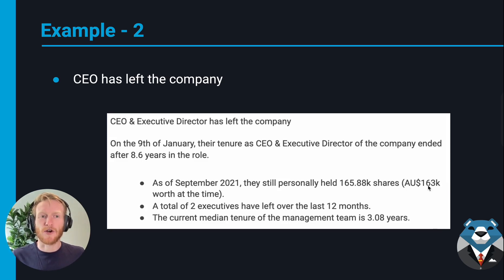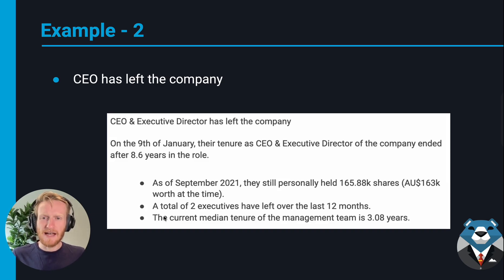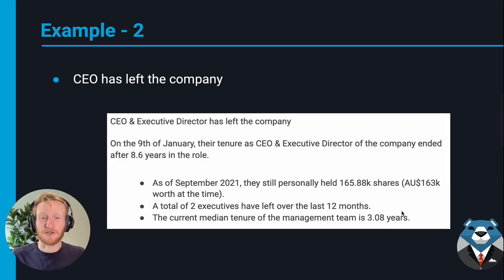I'll want to check the company's total market cap to get more context on that shareholding. A total of two executives have left over the last 12 months — again, not seemingly concerning, but I want to check the total management team size. The current median tenure of the management team is about 3.08 years, so people tend to stay around for a while — an average of three years is pretty good.